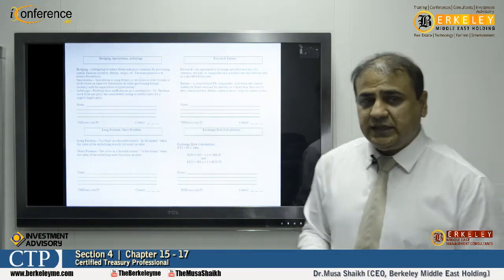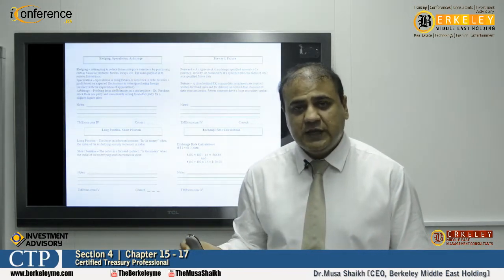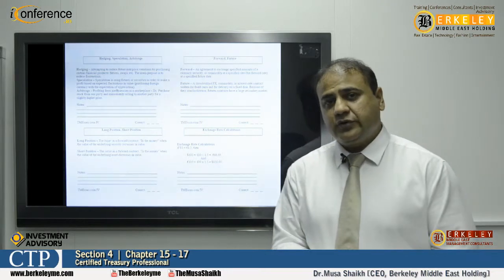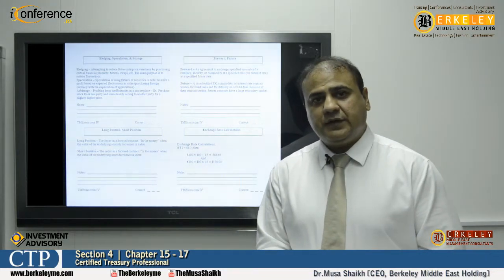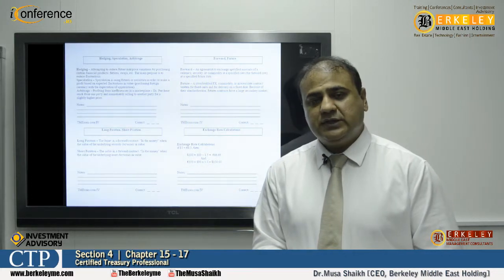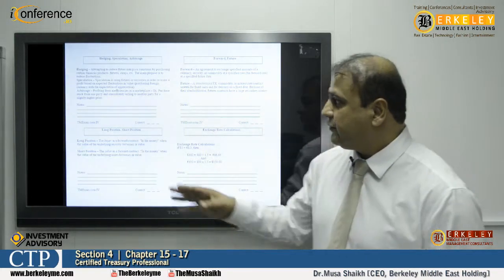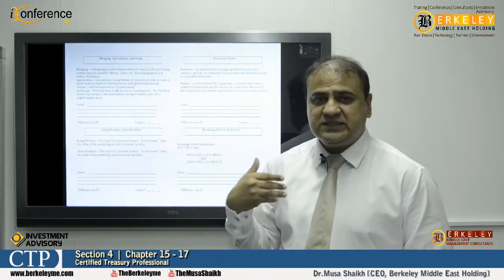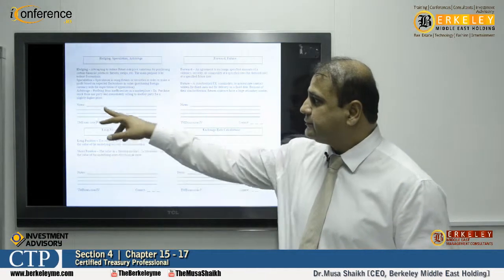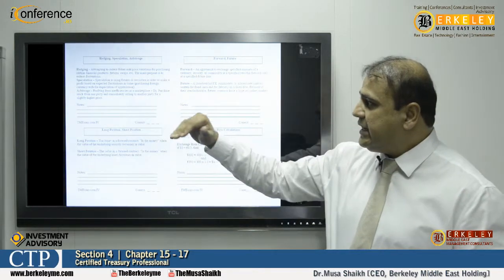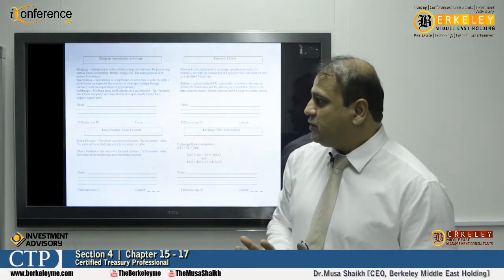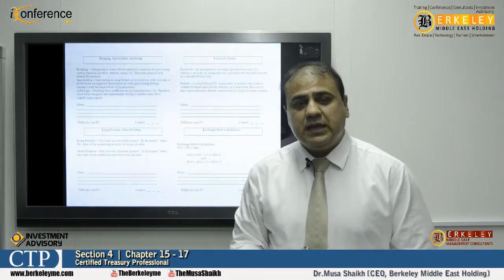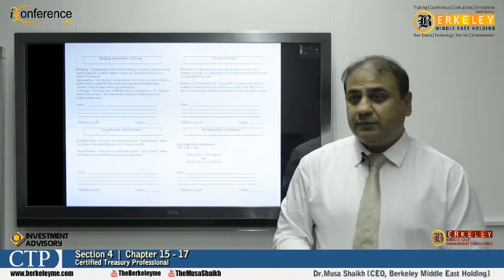Hedging is offsetting your risk against adverse price changes. For example, if you feel the dollar is going to be expensive in terms of euros, there are treasury products that can hedge and offset your risk, giving a gain or loss as a revenue outcome. Speculation is using futures or securities to make a profit based on an expectation. Arbitrage is profiting from inefficiencies in the marketplace — purchasing stock from one party and immediately selling to another for a slightly higher price, which is only possible in inefficient markets.